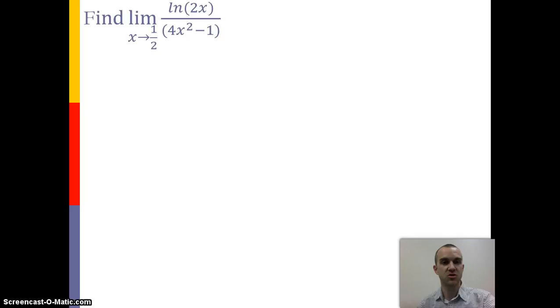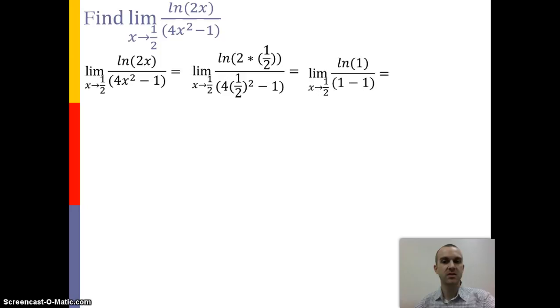So let's look at L'Hopital's Rule. If we looked at just the natural log of 2x over 4x squared minus 1, as the limit approaches a half, what we'd end up having is that this limit would be 0 over 0, which we cannot do.